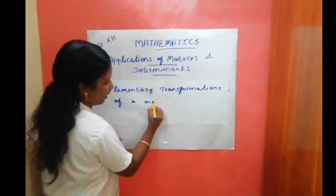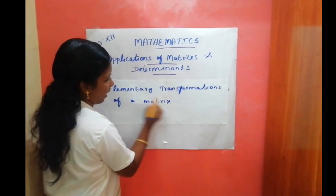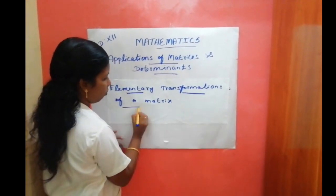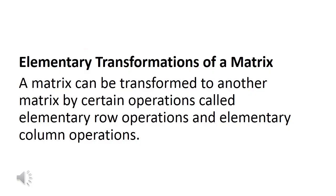Elementary transformations of a matrix means a matrix can be transformed to another matrix by some operations called elementary row operations and elementary column operations. These elementary row operations and elementary column operations are called elementary transformations of a matrix.